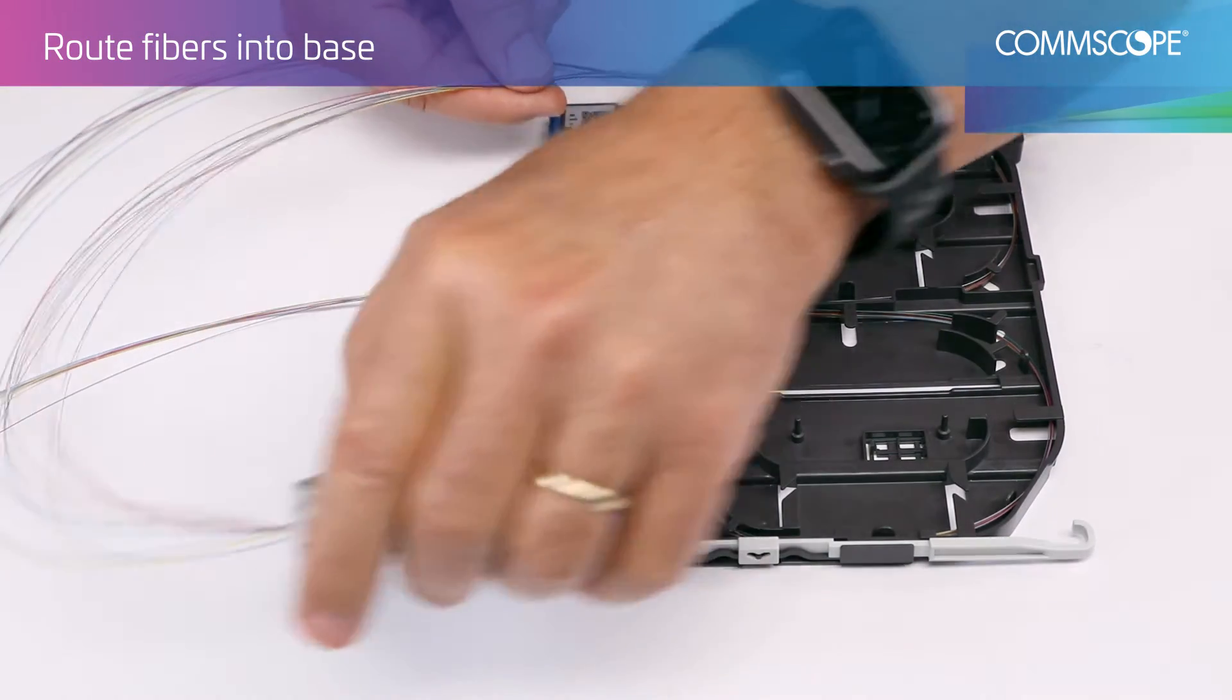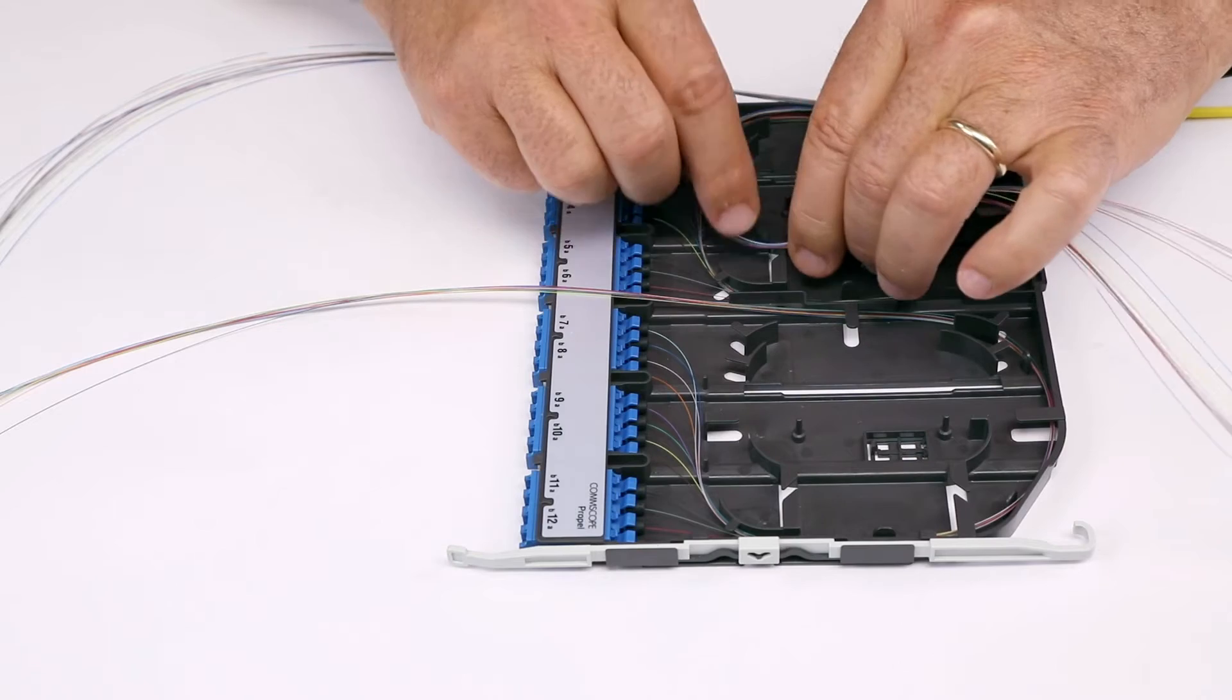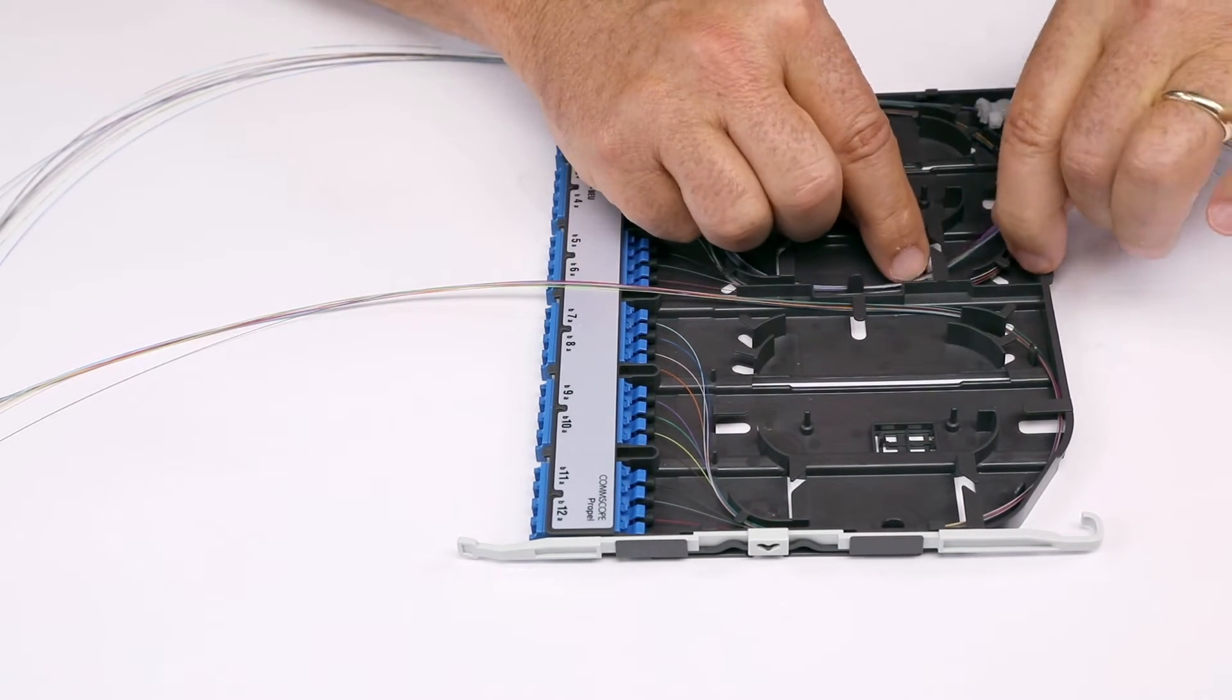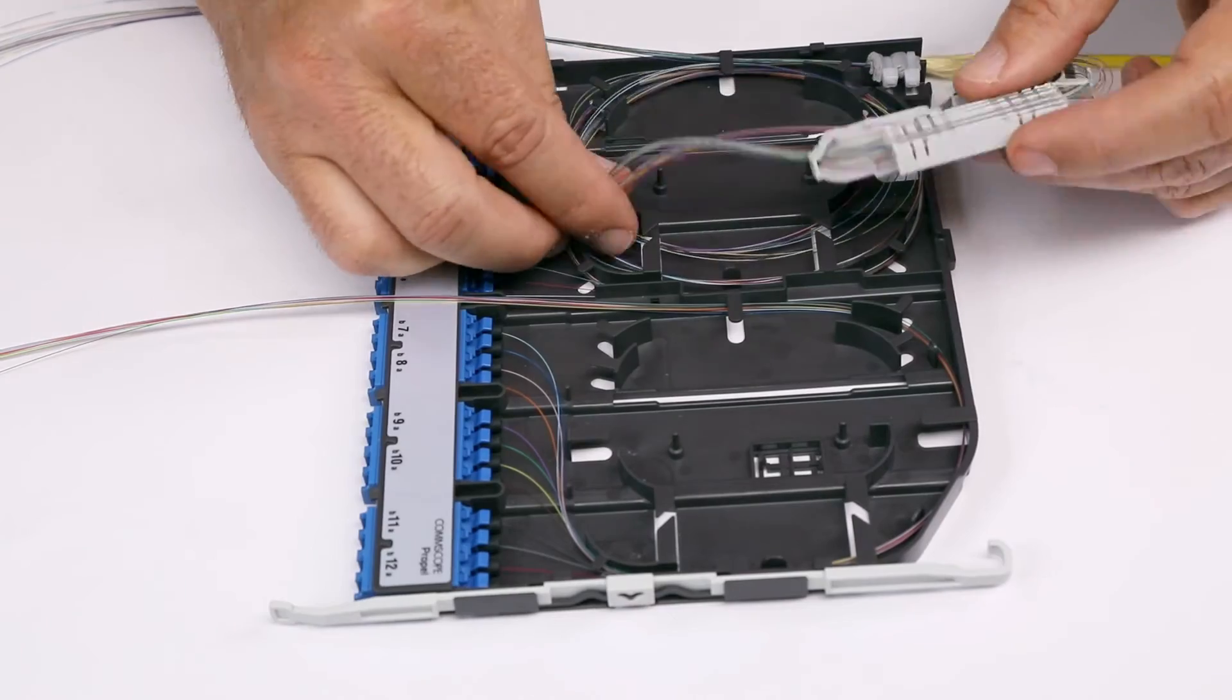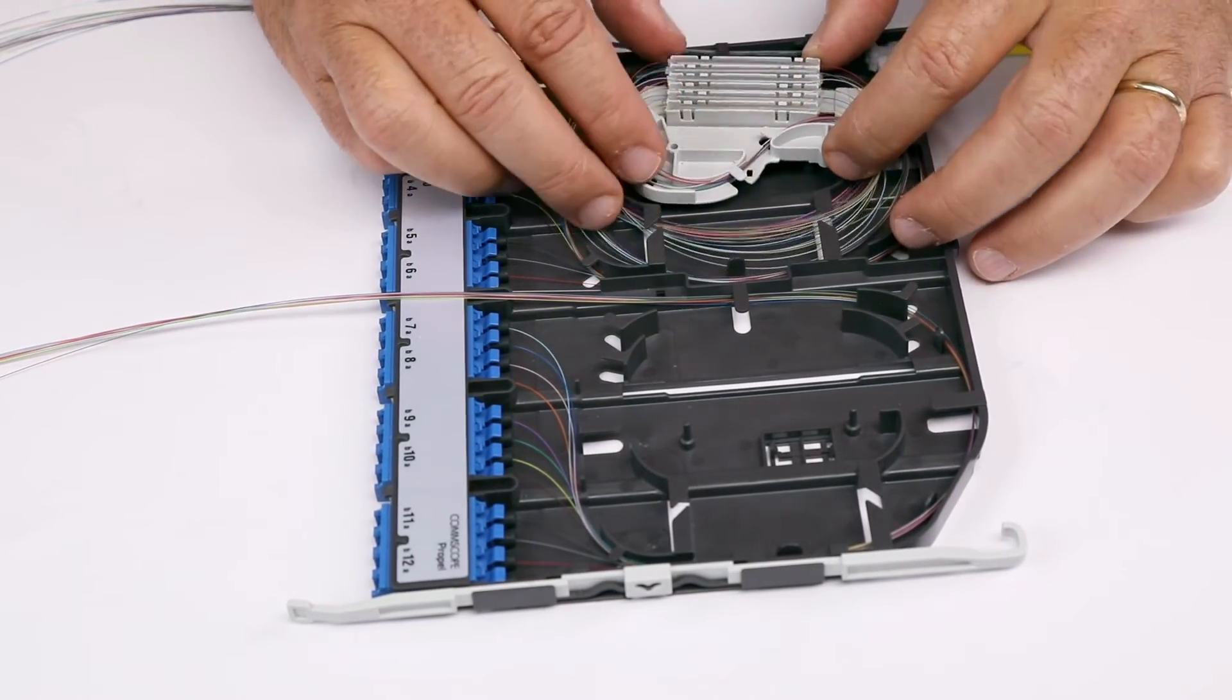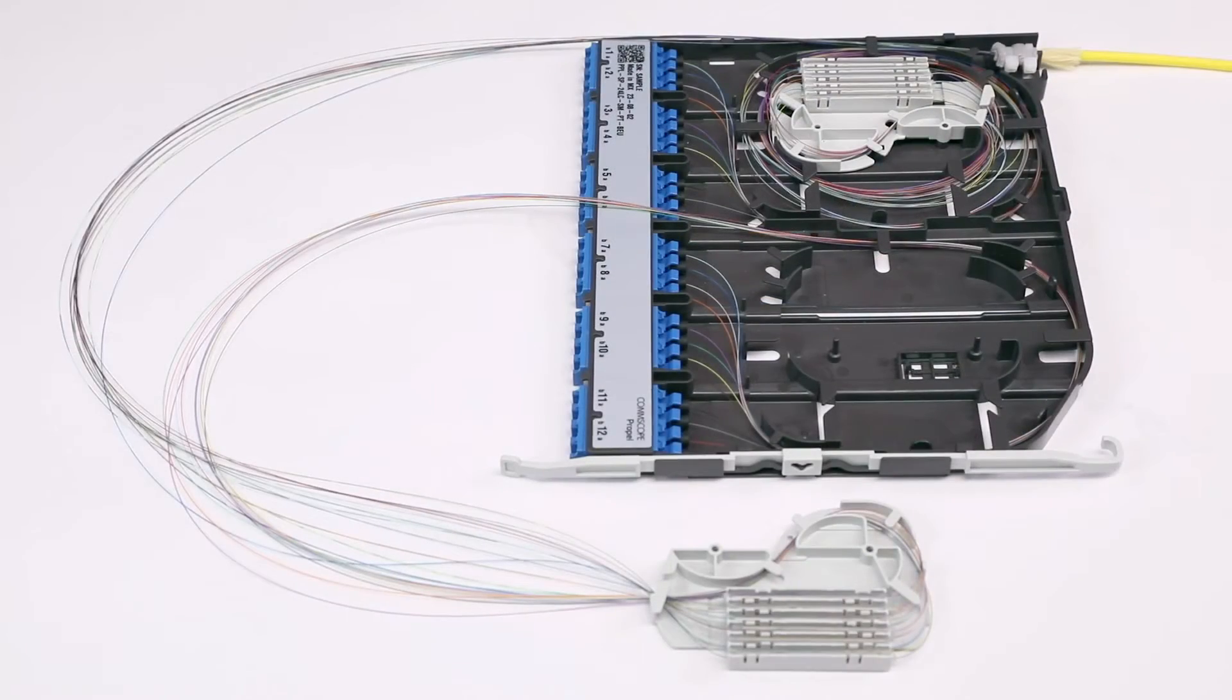Route pigtail fibers corresponding to fibers 1 through 12 counterclockwise starting along the outer half of the cassette and work inwards with each consecutive loop. Line up the pegs on the cassette base with the mounting holes on the spool to finish routing.